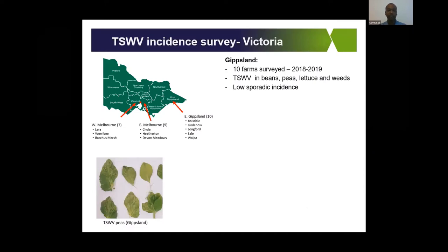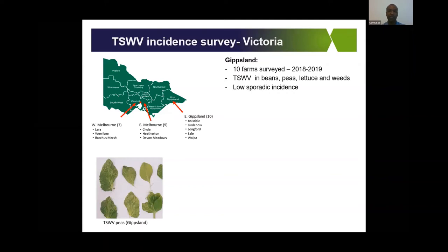As part of a Hort Innovation funded project on vegetable viruses and bacteria, we've been surveying for viruses including tomato spotted wilt across Victoria's vegetable growing regions. One area we've been visiting is the Gippsland area, which we visited in 2018 and 2019 — unfortunately this year we've not been able to visit because of movement restrictions. In Gippsland we found tomato spotted wilt in beans, peas, lettuces, tomatoes, and weeds, but incidence has been very low, likely due to drier than normal conditions which keep weed pressure down and reduce alternative hosts for thrips.